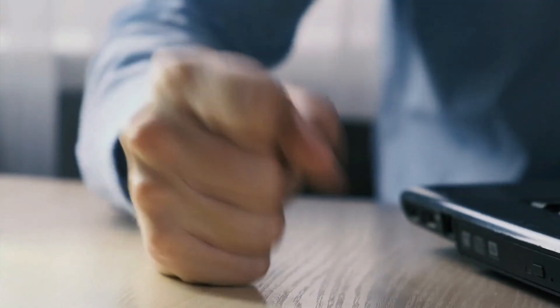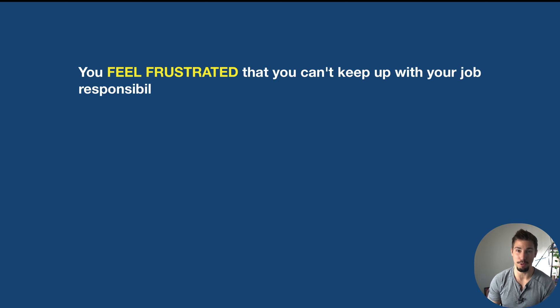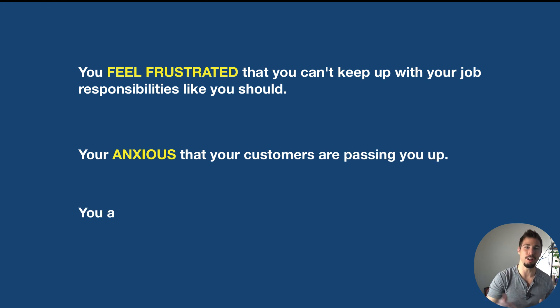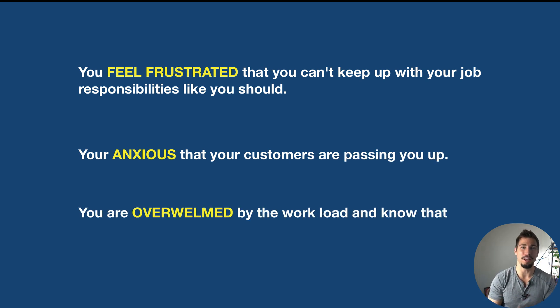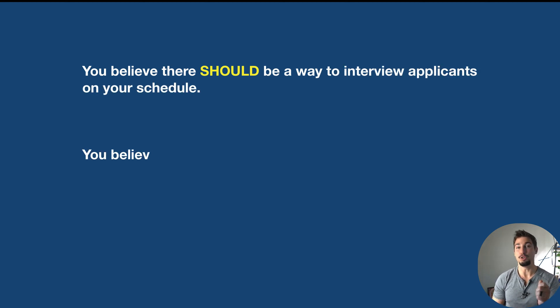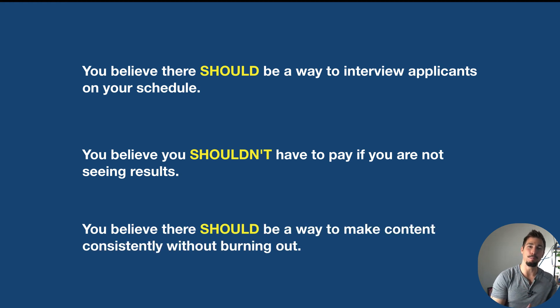Emotional problems are how you feel about the physical problem. Are they anxious? Are they frustrated? Are they overwhelmed? For example, you feel frustrated that you can't keep up with your job responsibilities like you should, or you're anxious that your customers are passing you up, or you are overwhelmed by the workload and know you can't keep it up. Philosophical problems are what the customer feels should or should not be the case — for example, you believe there should be a way to interview applicants on your schedule, or you believe you shouldn't have to pay if you're not seeing results, or you believe there should be a way to make content consistently without burning out.